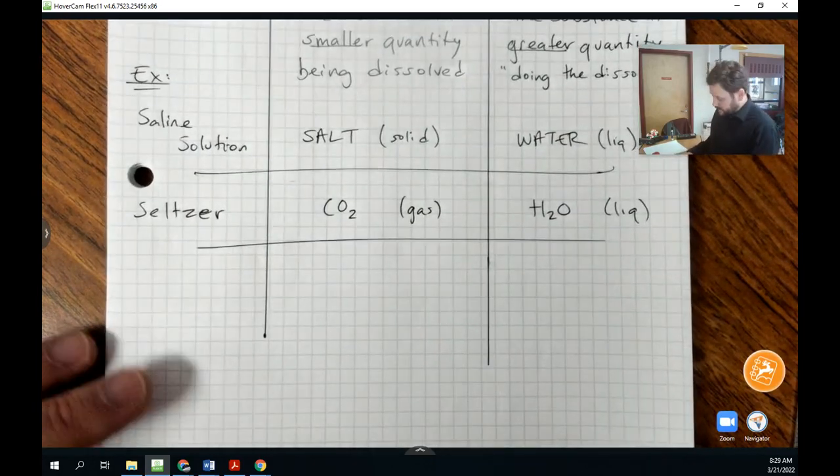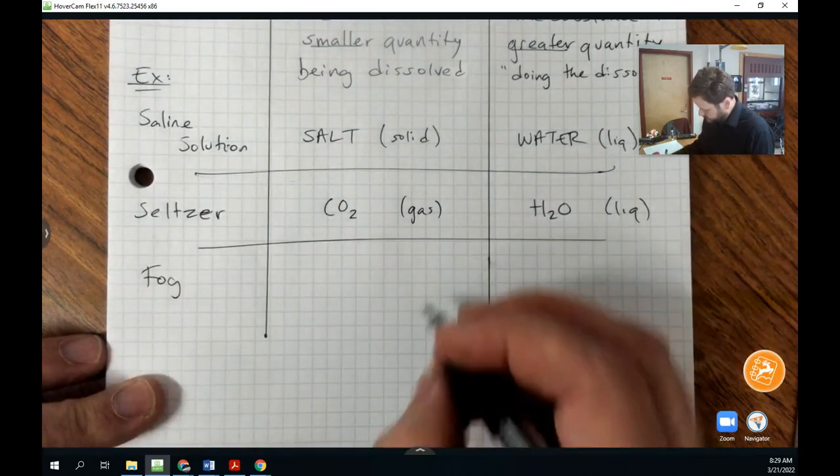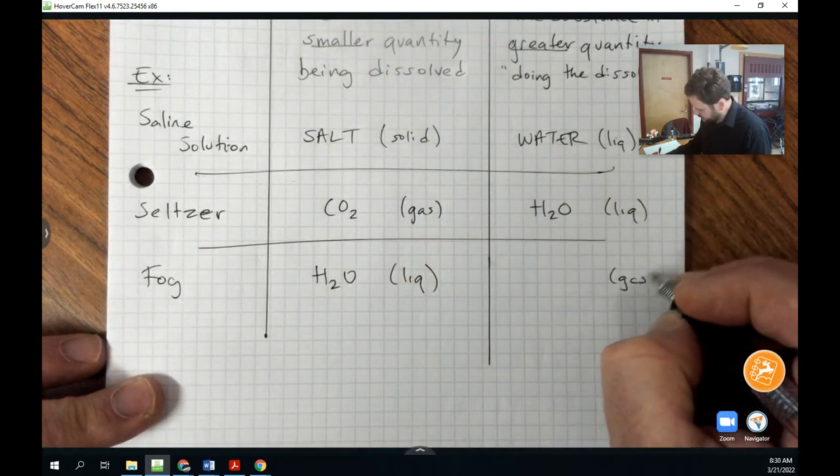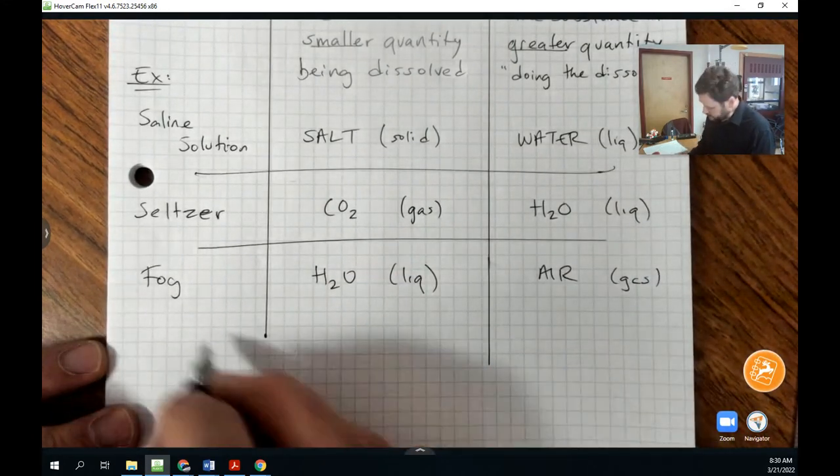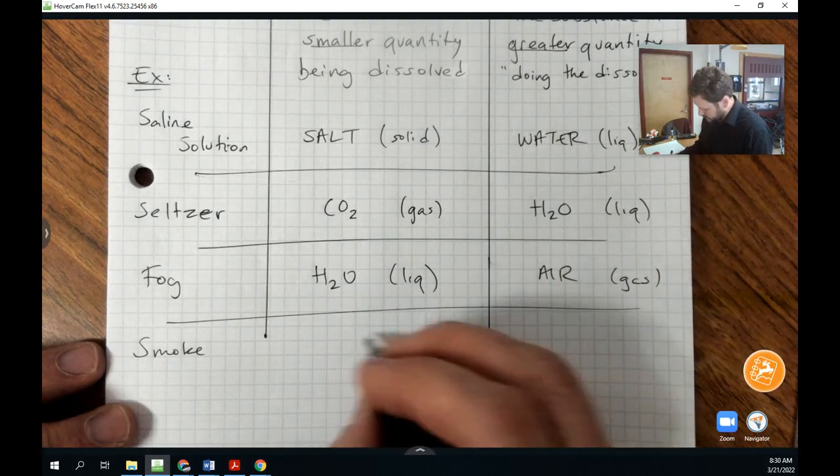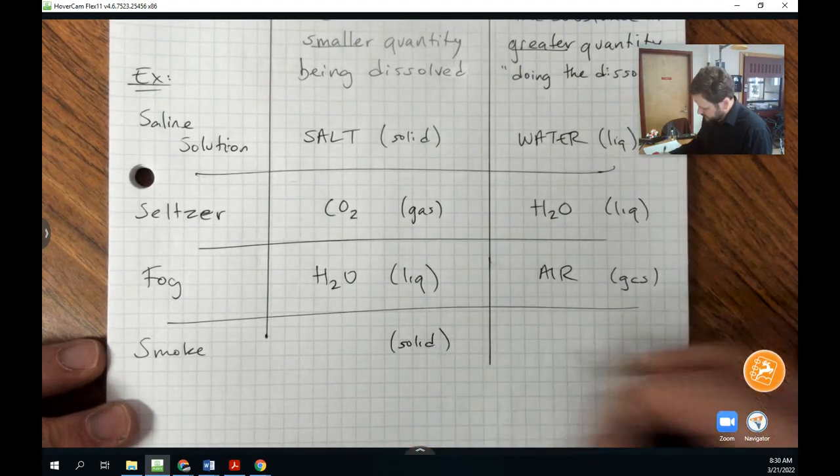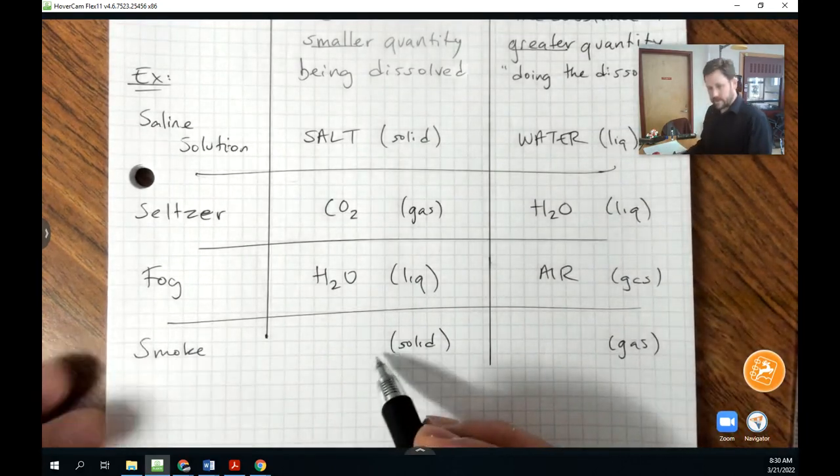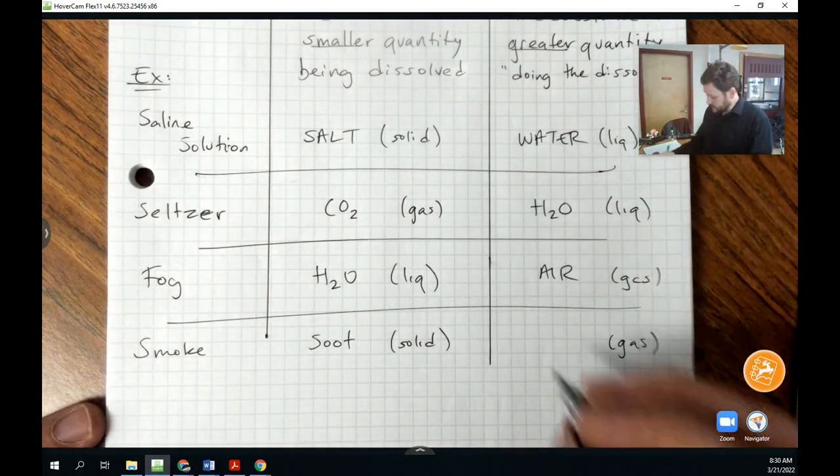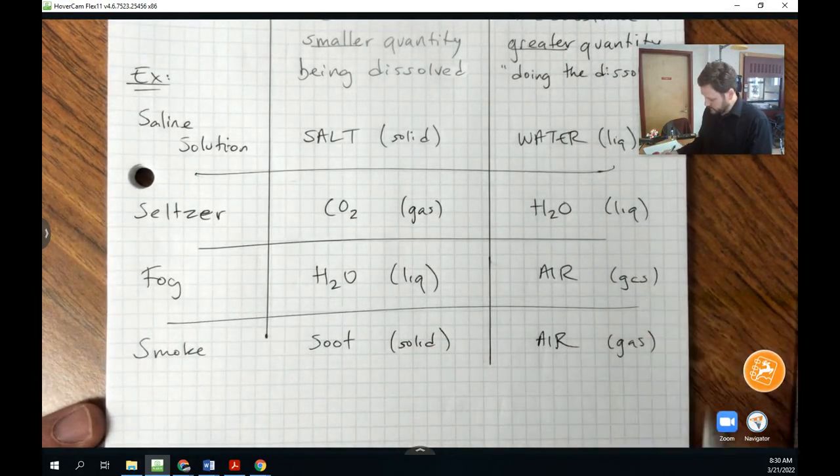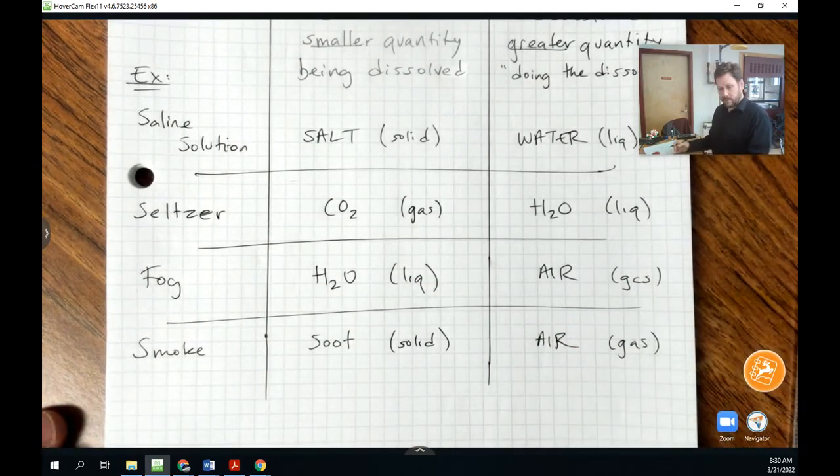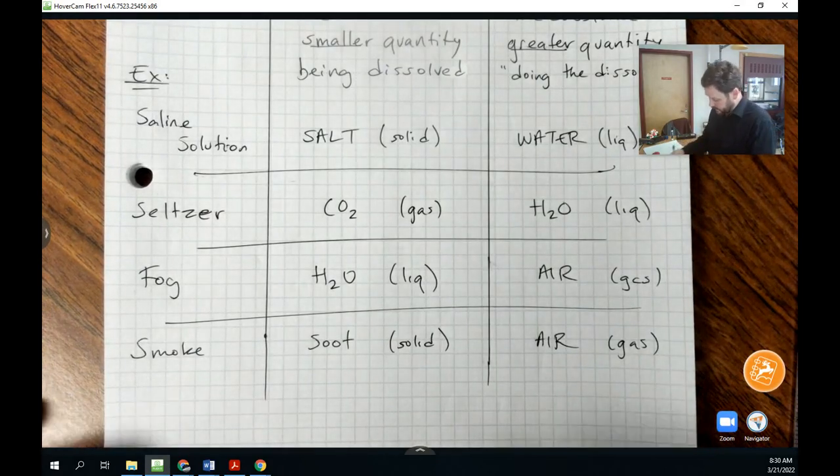Another example of a solution is fog. Fog is a liquid, water, dissolved in a gas, air. Smoke is an example of a solution. And that's an example of a solid dissolved in a gas. If you look carefully at smoke, you'll see it's just little particles of carbon or soot, might be an easier way to describe it, dissolved in air. And if you look at fog, you'll notice it's actually just little particles of water dissolved in the air. If you look at it through your headlights.